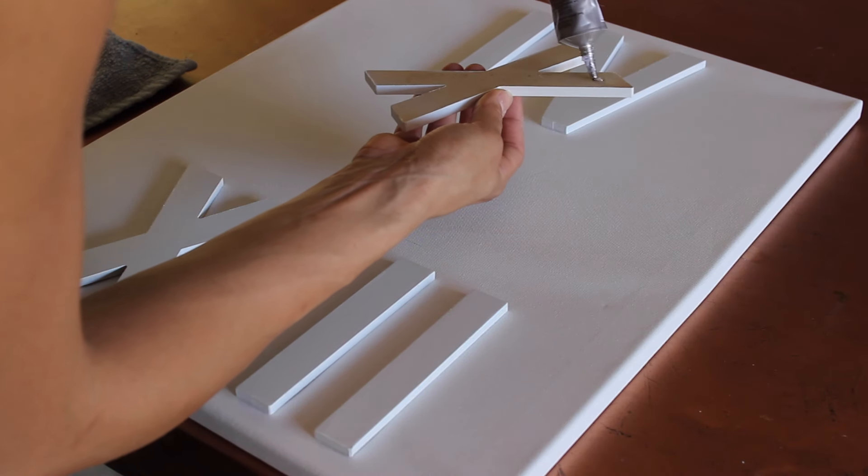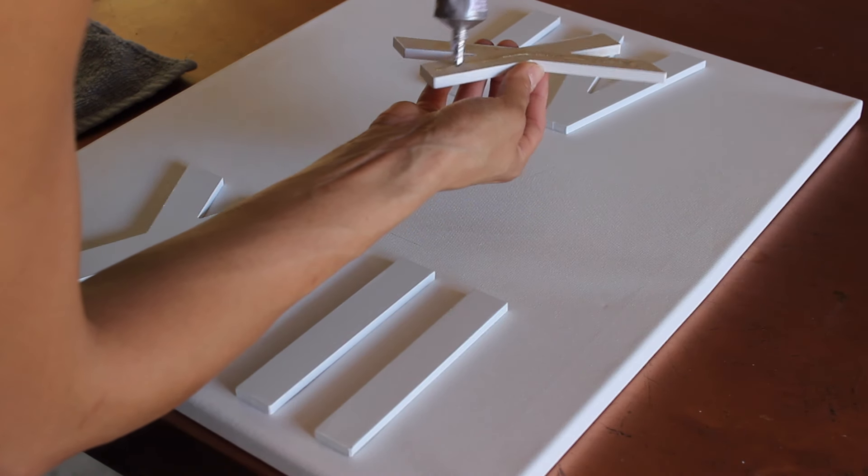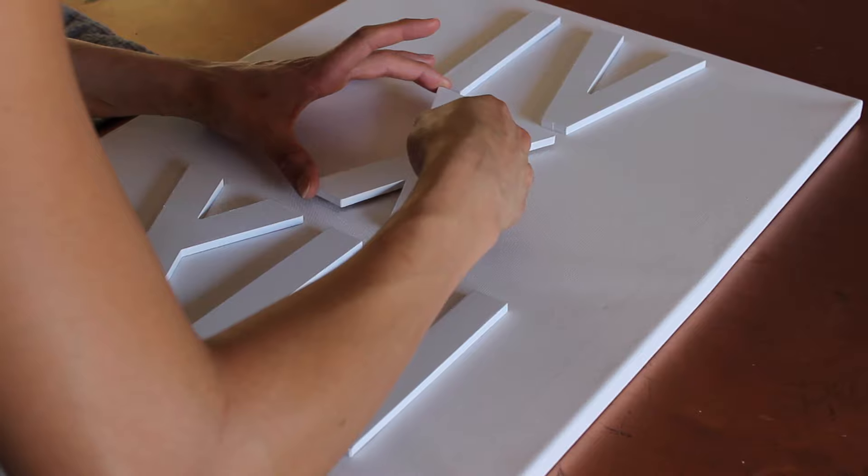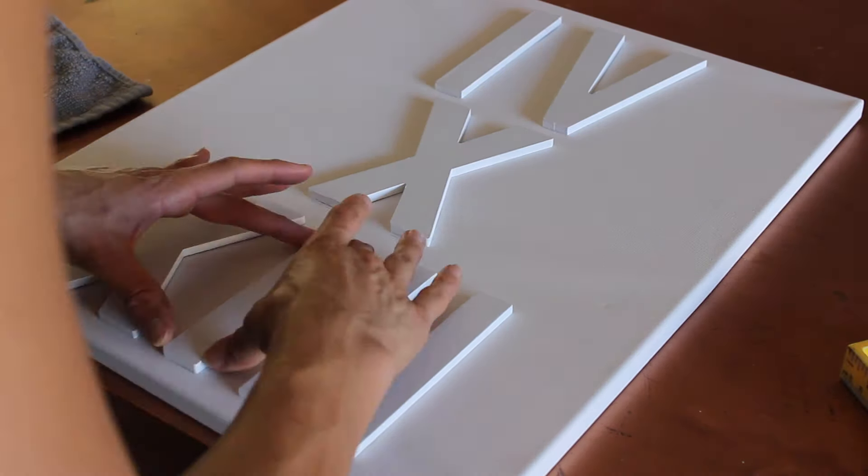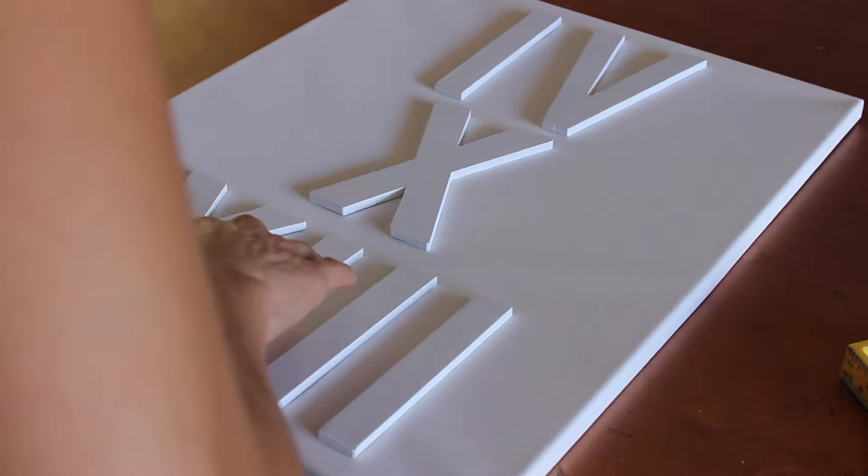And then I took my E6000 and literally just glued them directly onto the canvas. These guys are thin so they are not super heavy, you don't need to reinforce them. But also what I love is that you can paint the canvas a different color or the letters a different color. But again I just really love the white on white cleanliness of it.